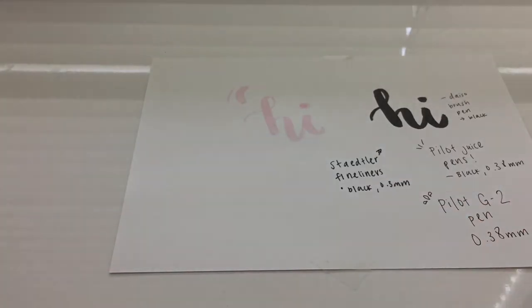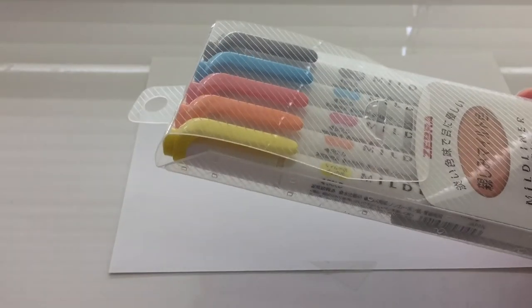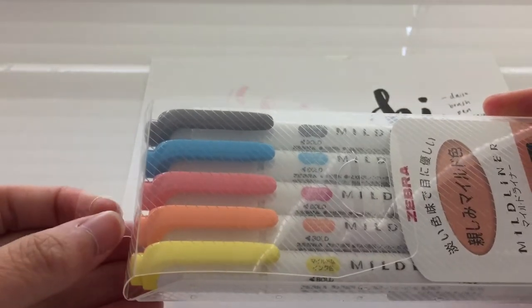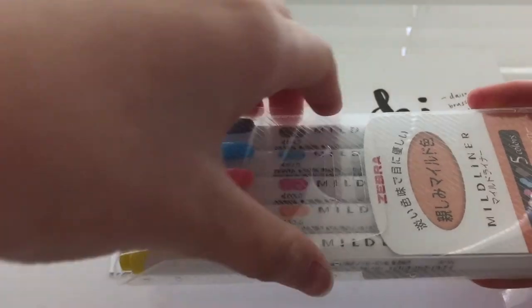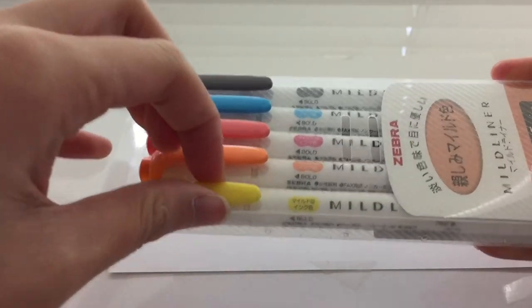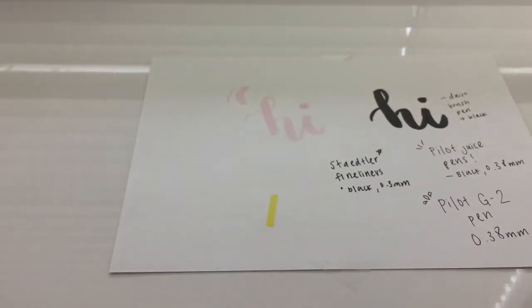Next are my favorite, the Mildliners. I decided to show you guys the peach box because it's rare to some people but you can just find it on eBay for about eight to nine dollars. These pens have a highlighter tip and a pen tip. You have to be careful because with the pen tip if you use it a lot it gets soft and it won't be as sharp anymore.